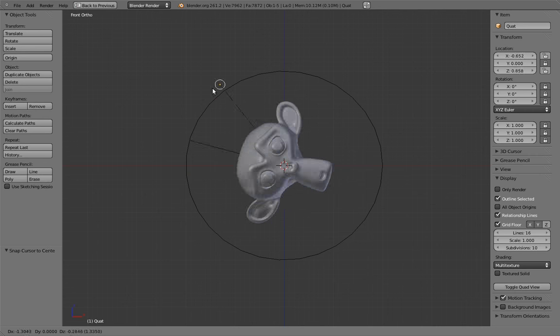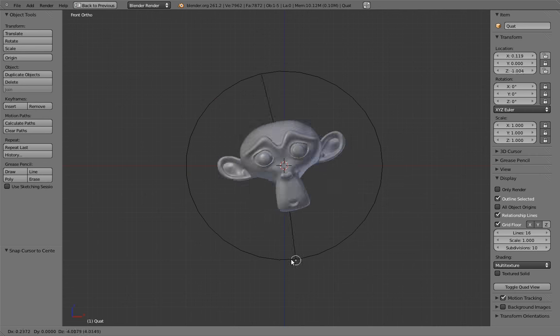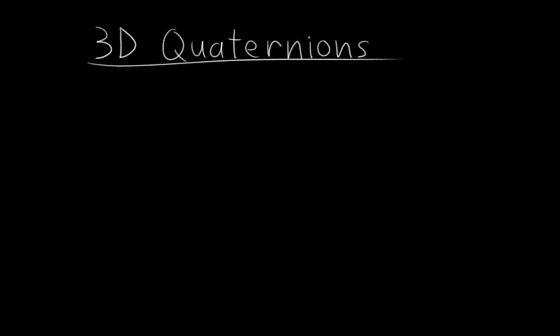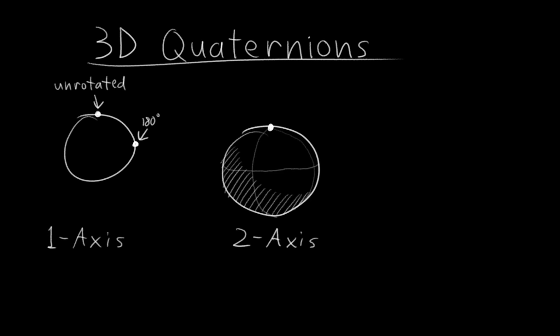Okay, so that's all well and good for 2D rotations, but how does it work on multiple axes for 3D rotations? Well, when we're only rotating on one axis with two numbers, the quaternion is a point on a circle, right? Where this is unrotated and this is rotated 180 degrees. When we're rotating on two axes with three numbers, the quaternion is a point on a 3D sphere, where this is unrotated, this is 180 degrees around the x-axis, and this is 180 degrees around the y-axis. And everything else is smoothly blending between those rotations.